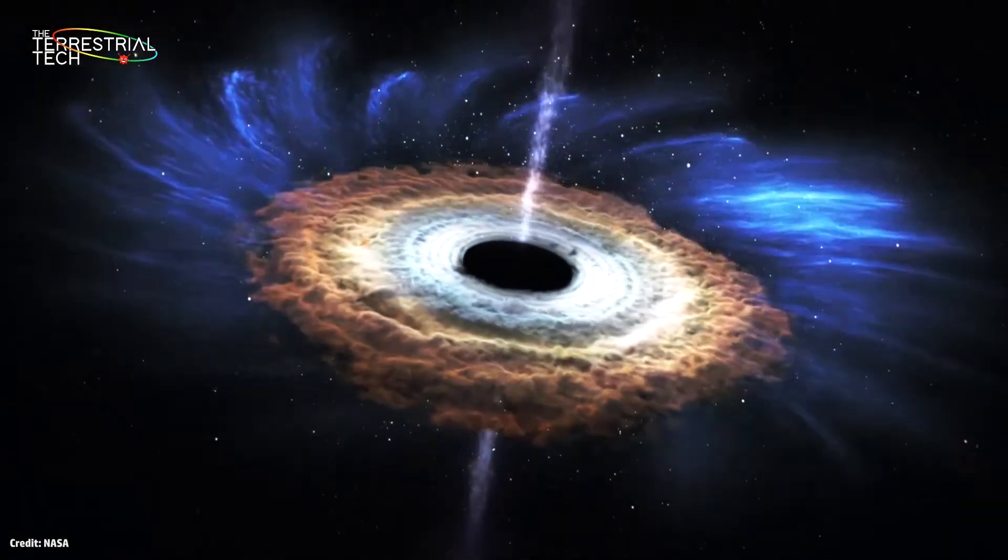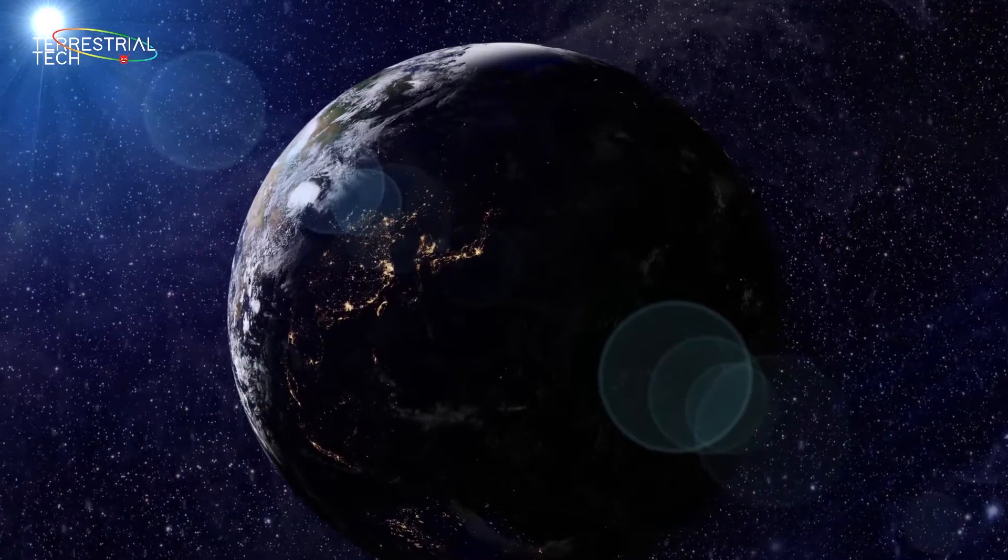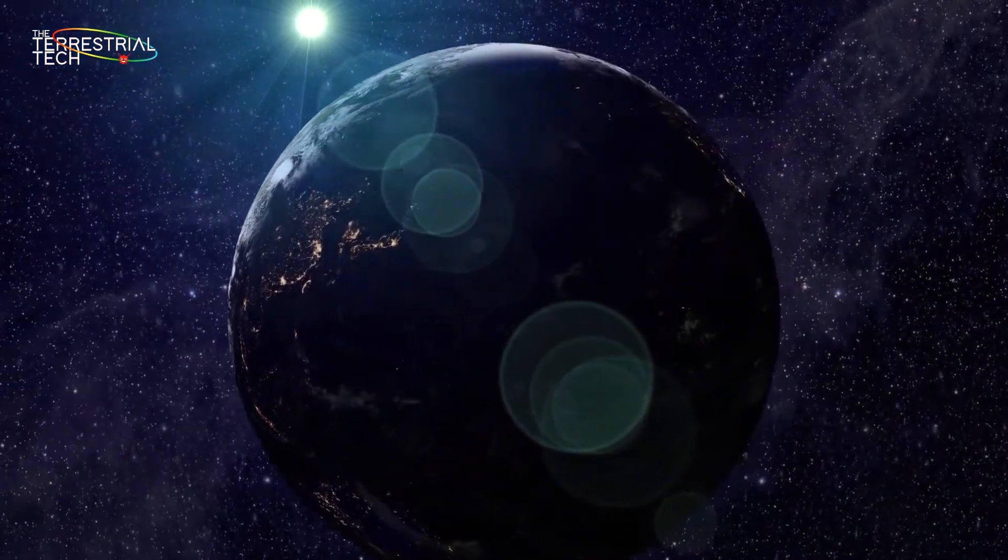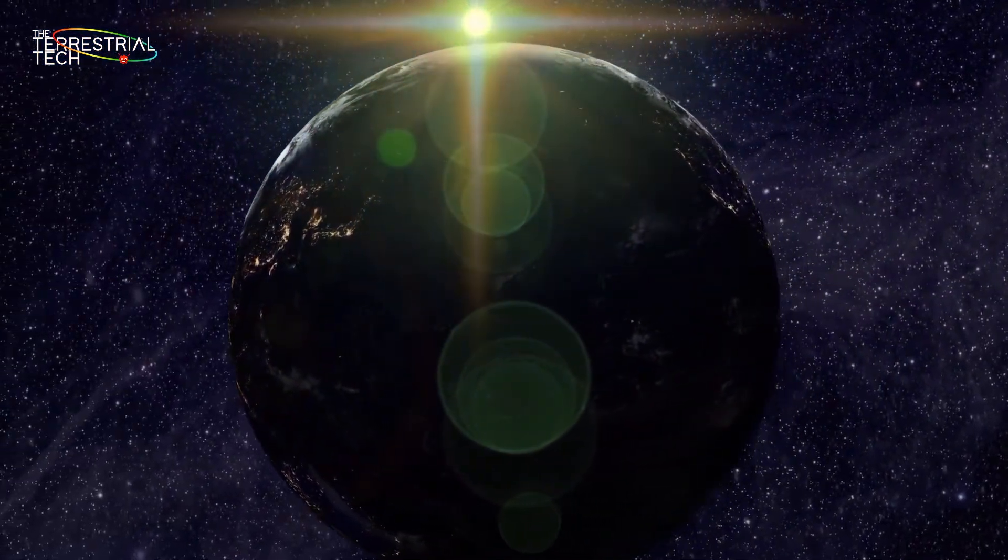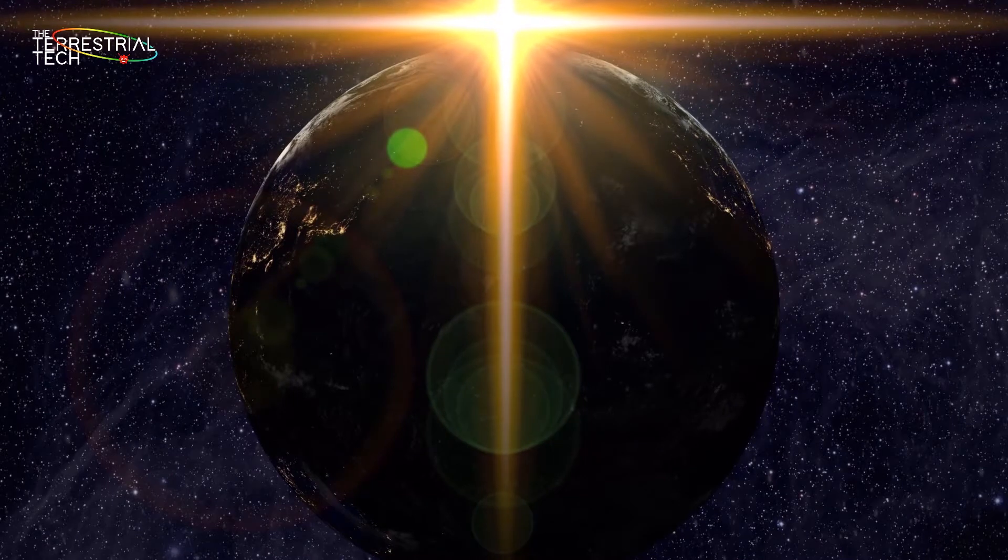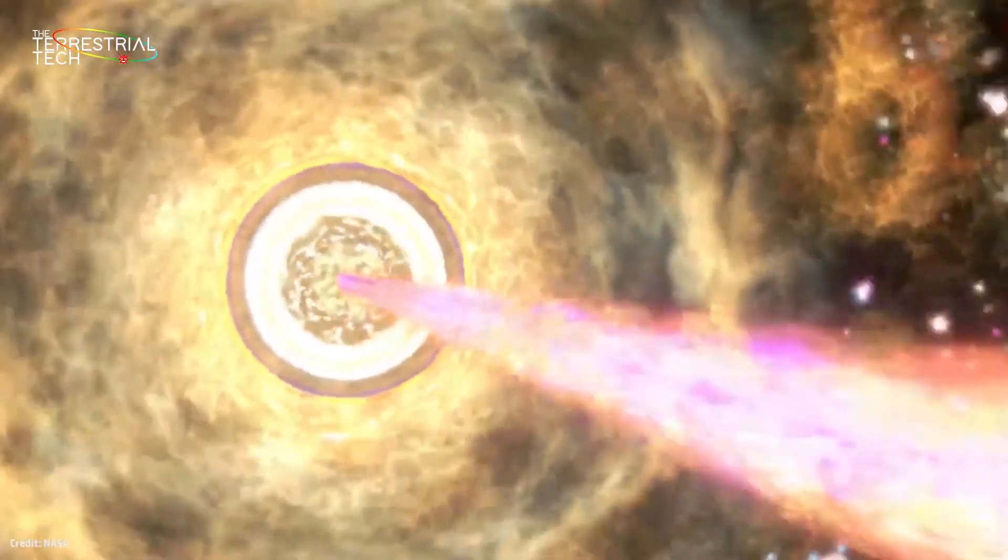These black holes are called quasars, but sometimes in a very rare event, these galaxies come in such a position when the direction of the jets emitted from their center is directed towards us, and then we call them blazars.